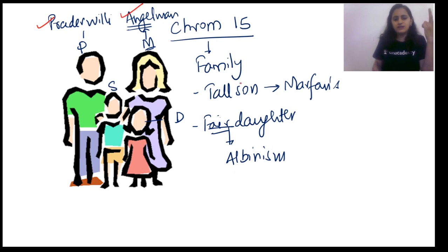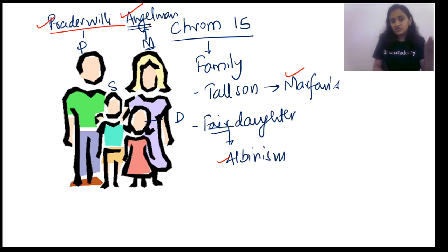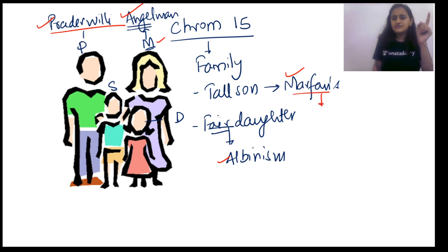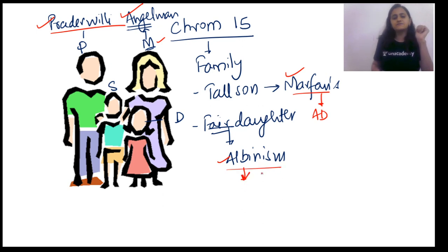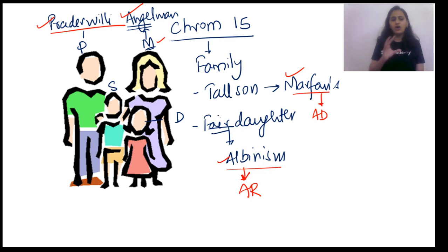Important: Prader-Willi is paternal deletion and maternal disomy. Angelman is maternal deletion and paternal disomy. Marfan's inheritance pattern is autosomal dominant. Albinism — asked last year in MEET PG — its inheritance pattern is autosomal recessive. We will cover all those inheritance patterns in a revision session on the Unacademy Plus platform.